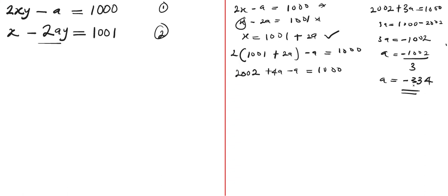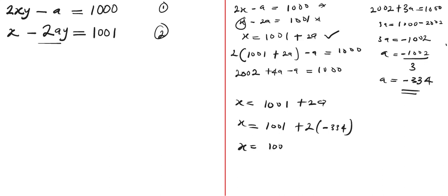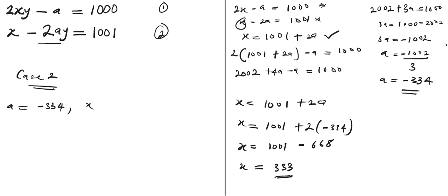To find x, we substitute a equals negative 334 into x equals 1001 plus 2a: x equals 1001 plus 2(negative 334) equals 1001 minus 668 equals 333. So for Case 2: a equals negative 334, x equals 333, and y equals 1.